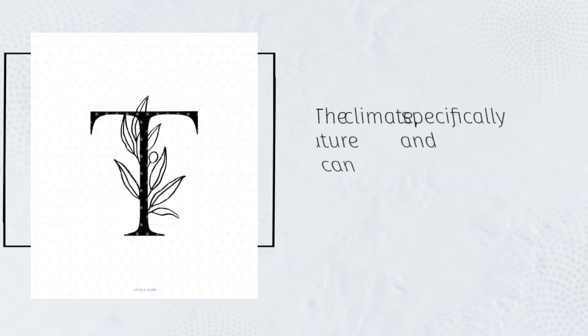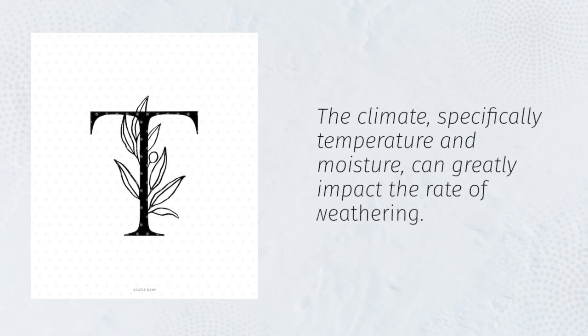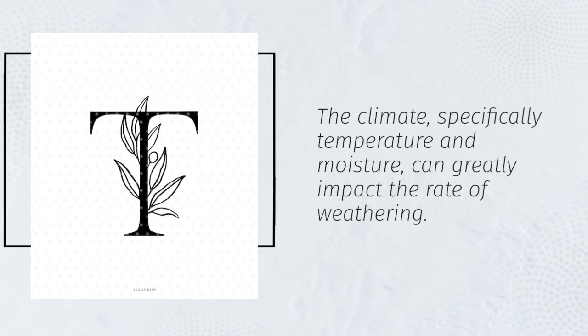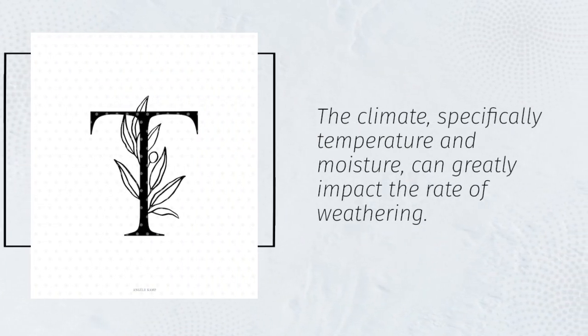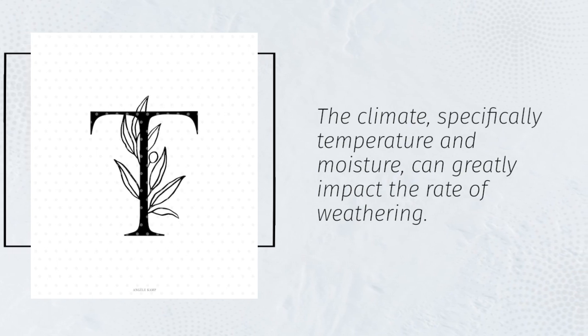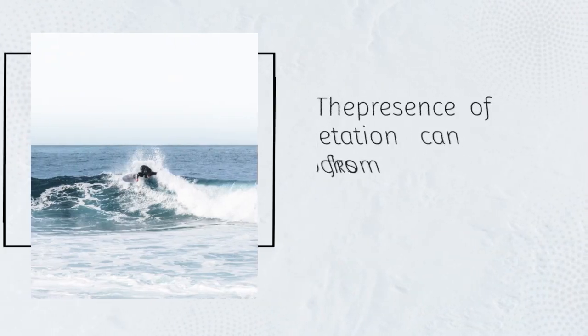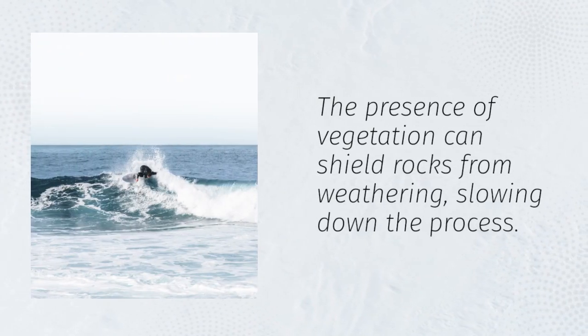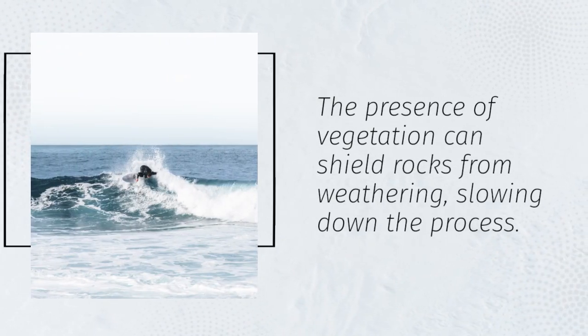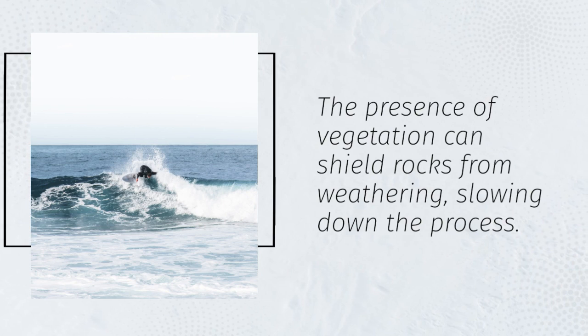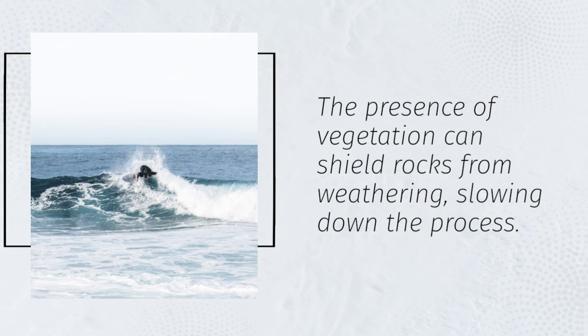The climate, specifically temperature and moisture, can greatly impact the rate of weathering. The presence of vegetation can shield rocks from weathering, slowing down the process.